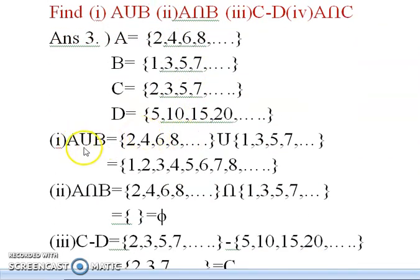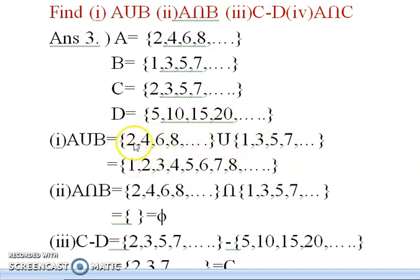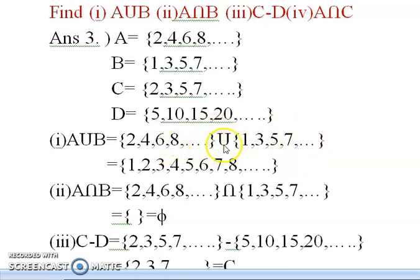Union means: either elements of A, or elements of B, or both elements of A and B. So combining A = {2, 4, 6, 8, …} and B = {1, 3, 5, 7, …}, I write them in order: 1, 2, 3, 4, 5, 6, 7, 8, … and it goes on. Since both are infinite, A union B also goes on infinitely.